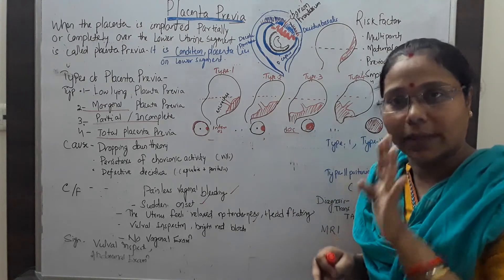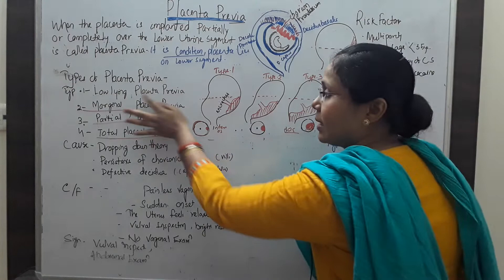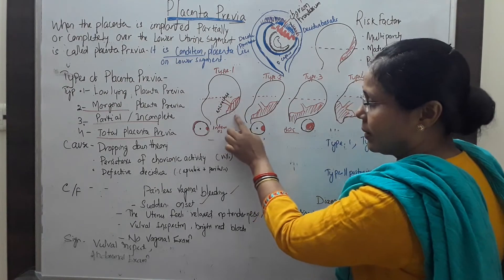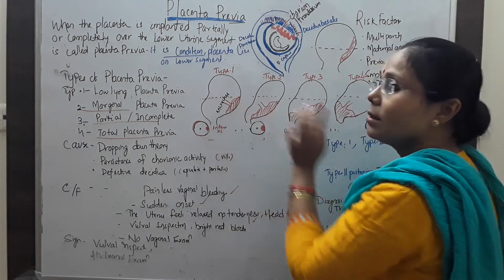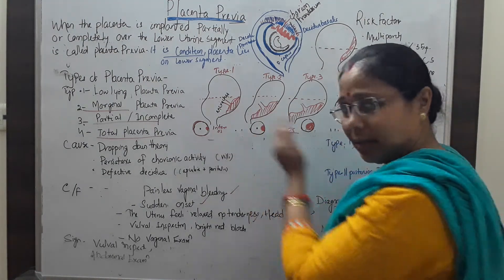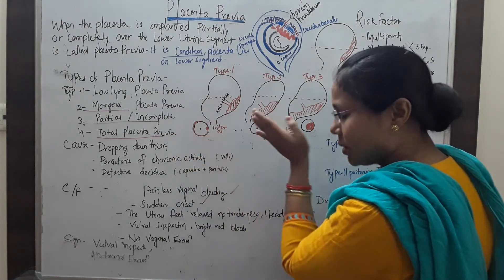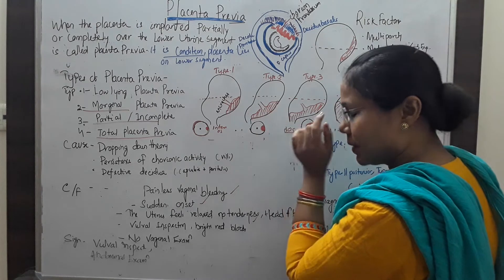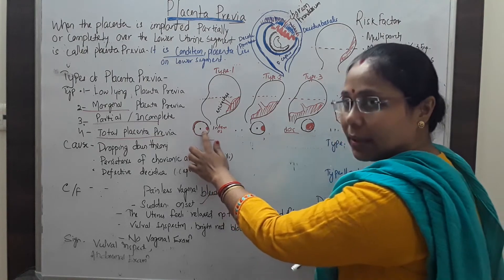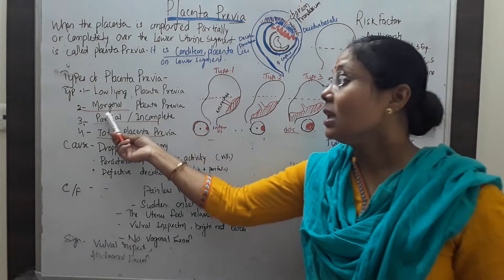Due to their positioning, the placenta is divided into 4 types. Type 1 is called low-lying placenta previa. If we draw an imaginary line, it is just at the low uterine segment. On internal examination, we find the placenta reaches up to the internal os. The second is Type 2, called marginal placenta previa. The name indicates that the placenta is present on the margin of the lower uterine segment.